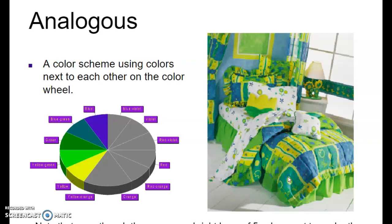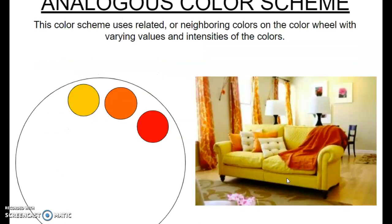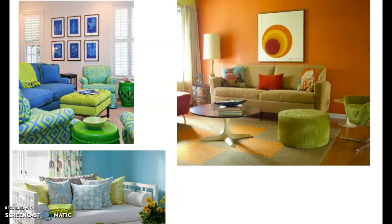Note that even though these are very bright hues of five colors next to each other, they are still analogous even if they are bright. They can even be tints of colors — so pinks, light yellows — but it's still considered analogous if they're next to each other on the color wheel. Here's an analogous color scheme using red, orange, and yellow, and a few others as well.